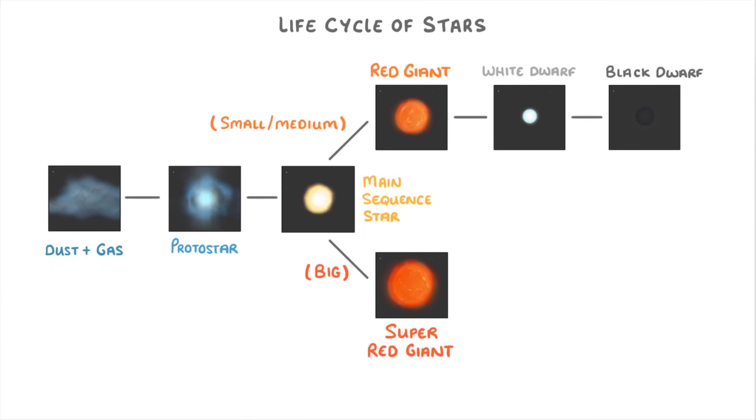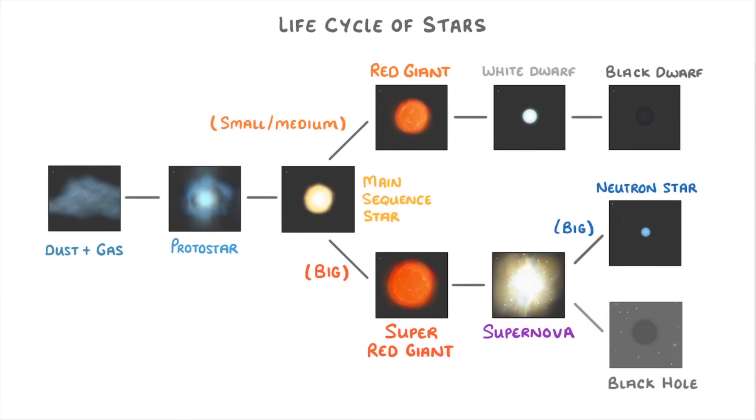Meanwhile, the red supergiants explode in a supernova, ejecting heavy elements across the universe. And it then condenses into a neutron star, if it was only pretty big, or into a black hole if it was truly massive.